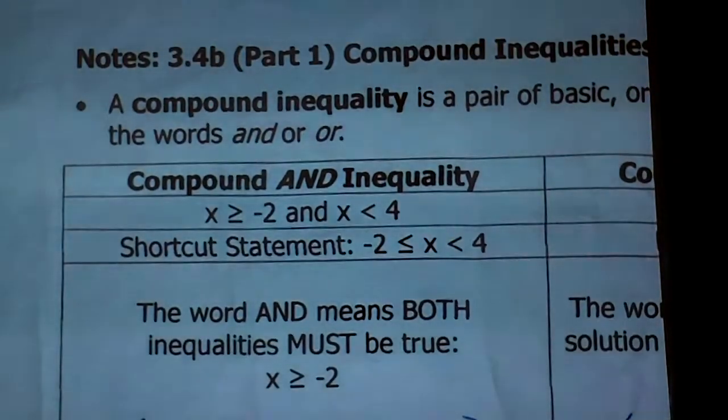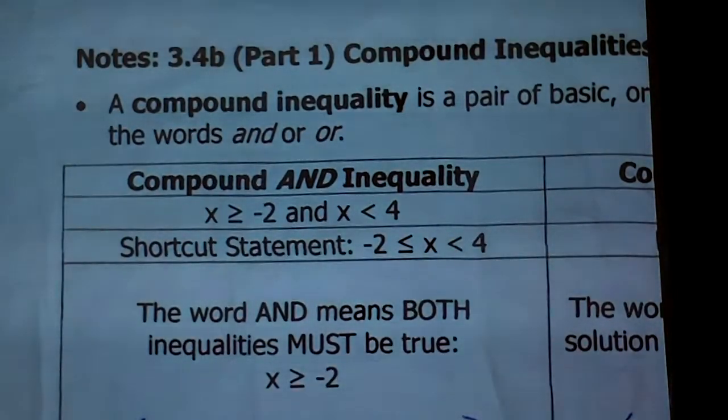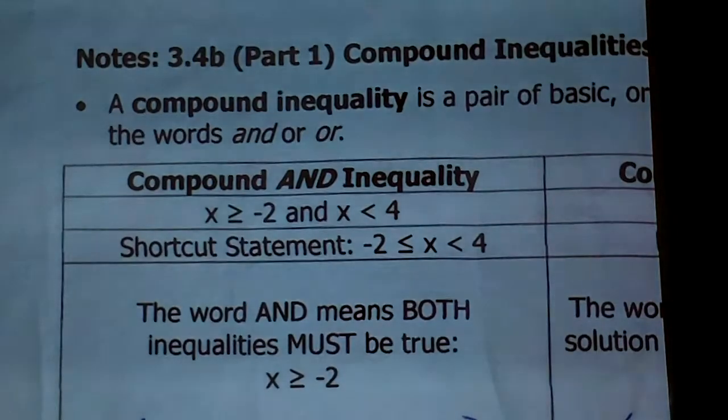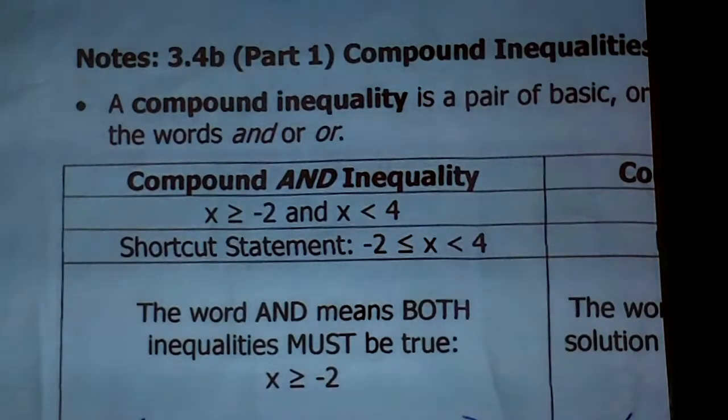So, compound inequality — what is it? It's a pair of basic or simple inequalities that are linked by the words 'and' or 'or'.